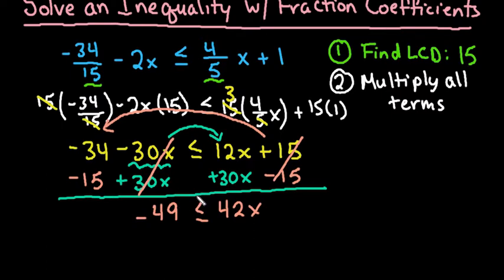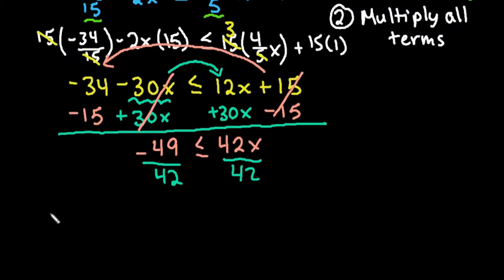We now just have to get x by itself, so to do that we would divide both sides by 42, and it does not go in evenly, so there are multiple ways of writing this.